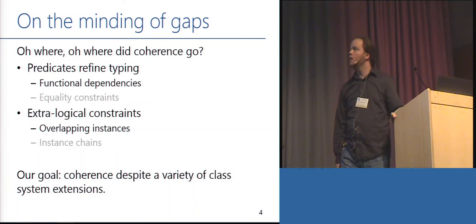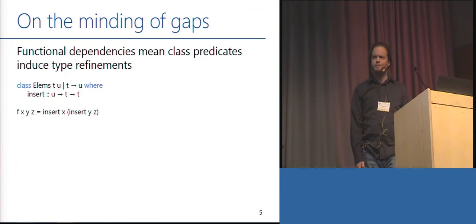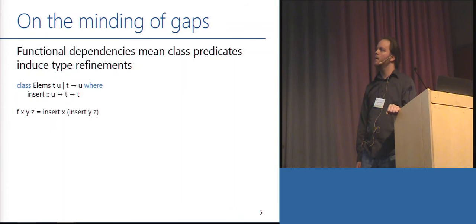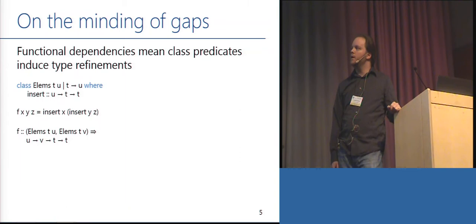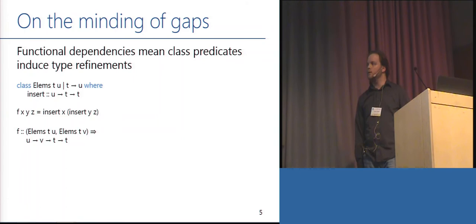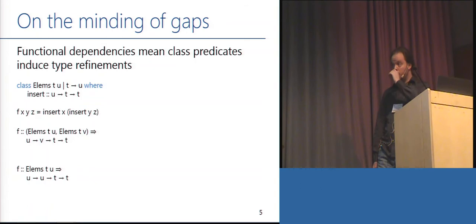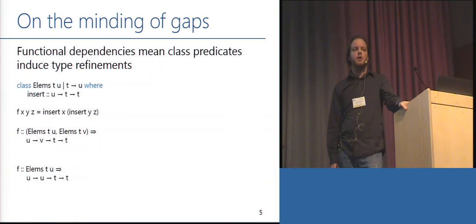Let's talk about functional dependencies. Functional dependencies allow us to induce type refinements from class predicates. Here's the first example: a class of collections where the elements of T are U, with an insert method that takes an element U and a collection T and gives back a new collection. Here's a function that inserts two elements X and Y into a collection Z. Type inference gives us a type where elements of T are both U and V. But the functional dependency tells us the collection type T determines the element type U — so if elements of T are U and elements of T are V, then U and V must be the same type, and these two types are exactly equivalent.